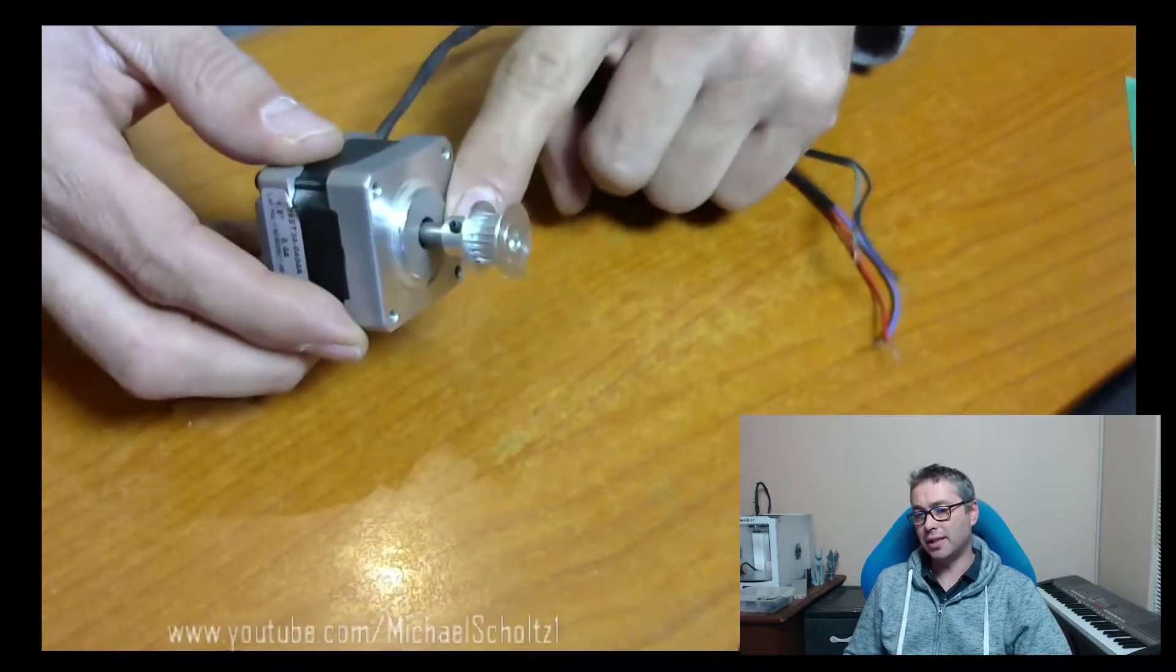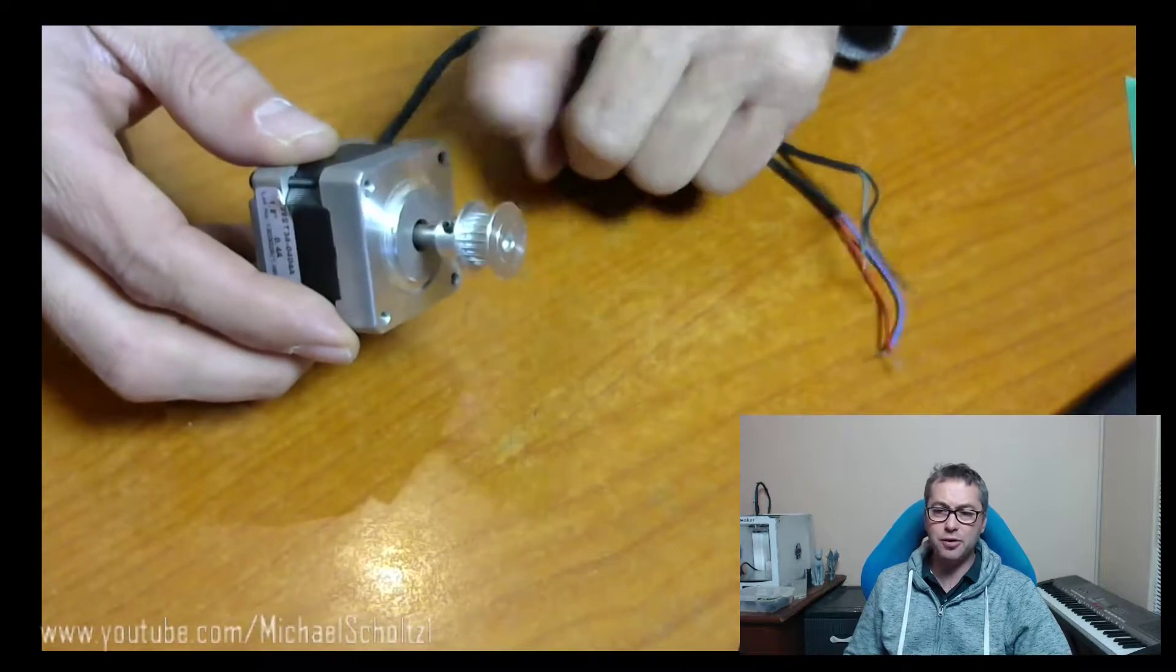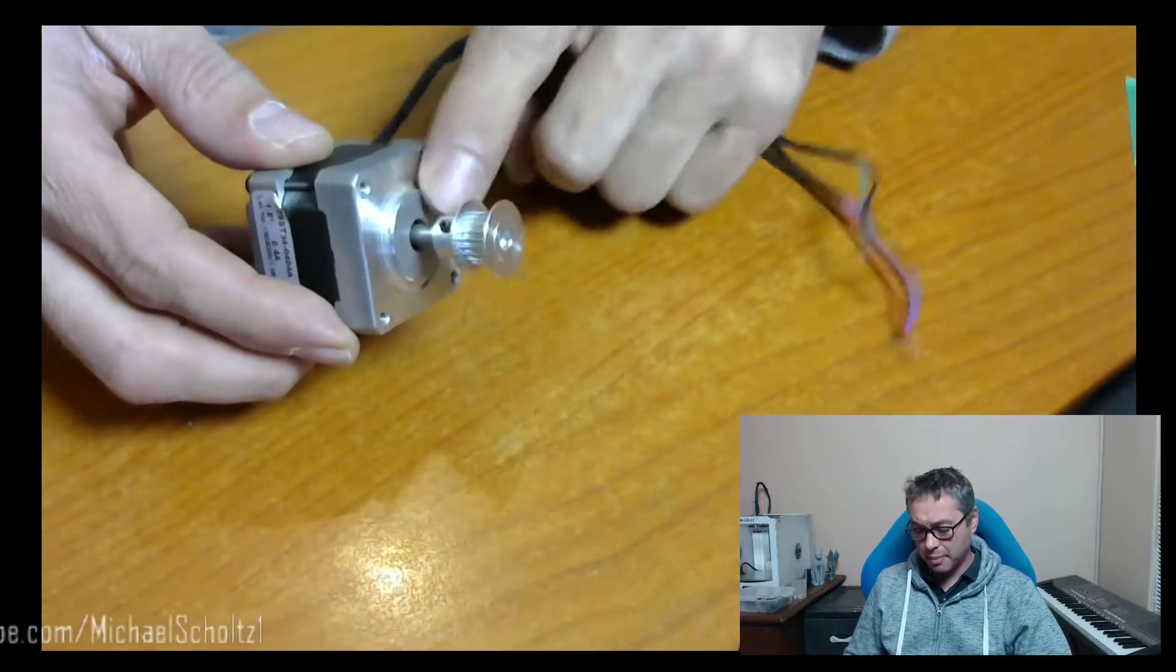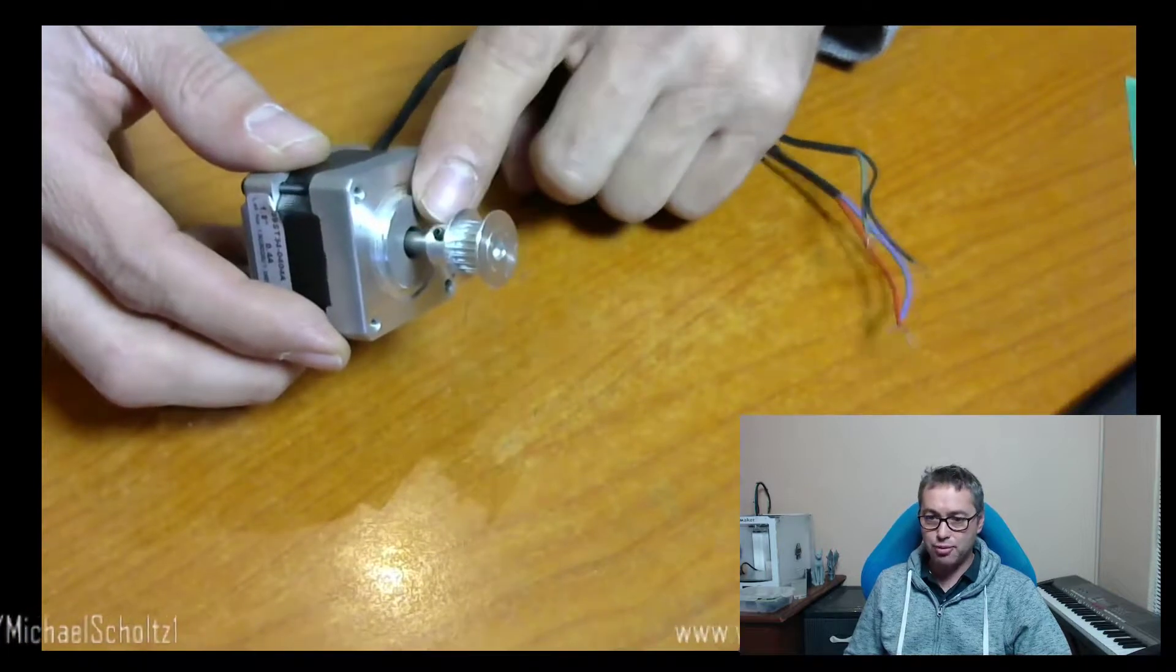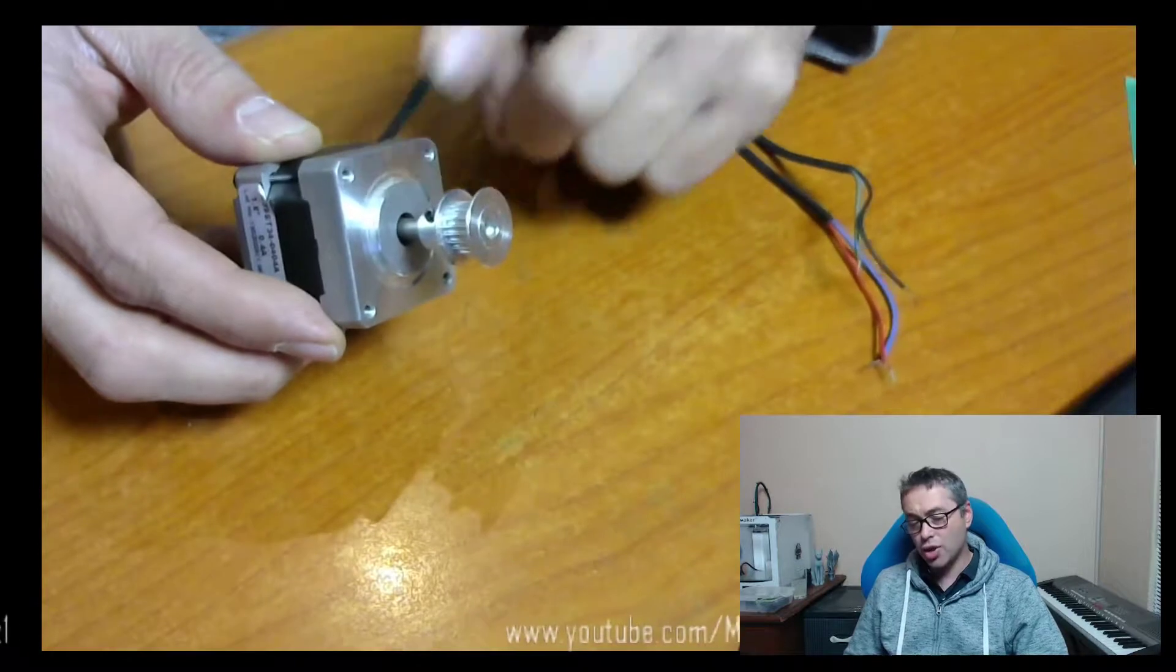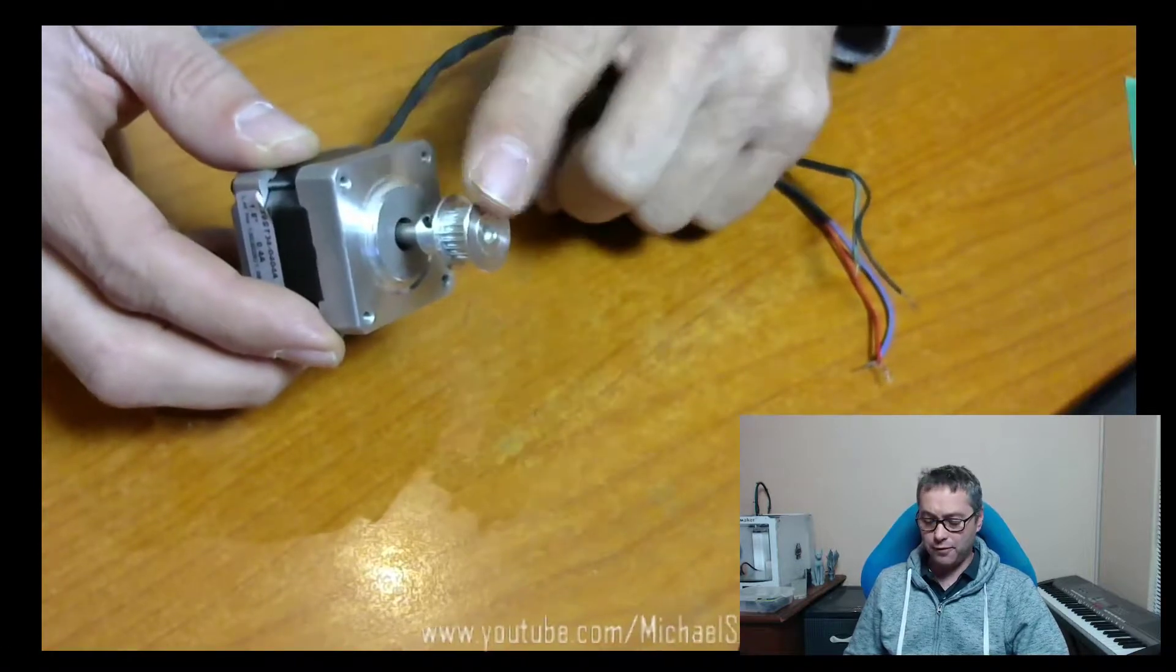Some of them can be different—different size motors, different manufacturers—but in general they're probably a 5 millimeter shaft. The shaft can be round or it can be flat on one side, which makes it easier for these grub screws to bite onto them.